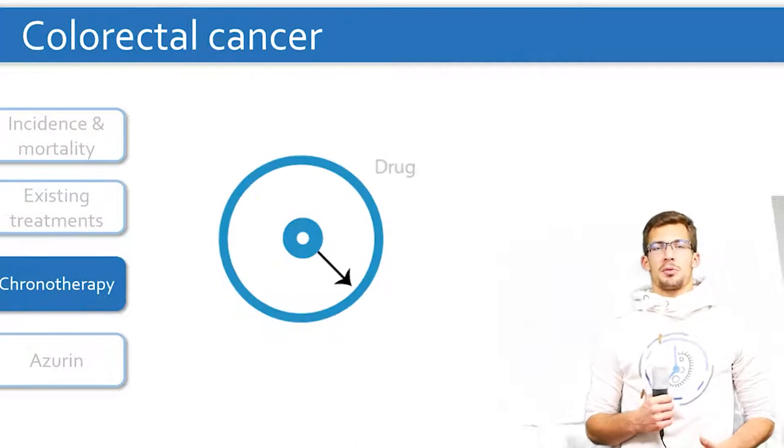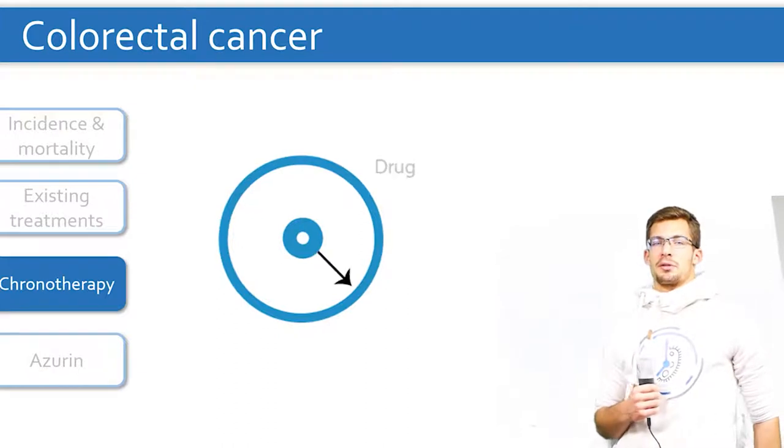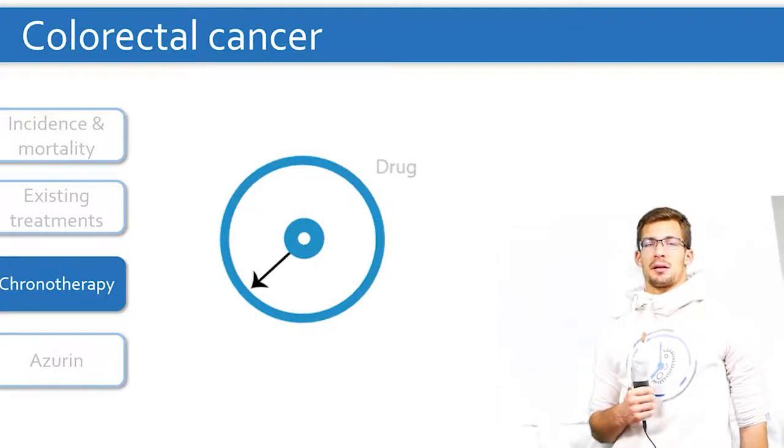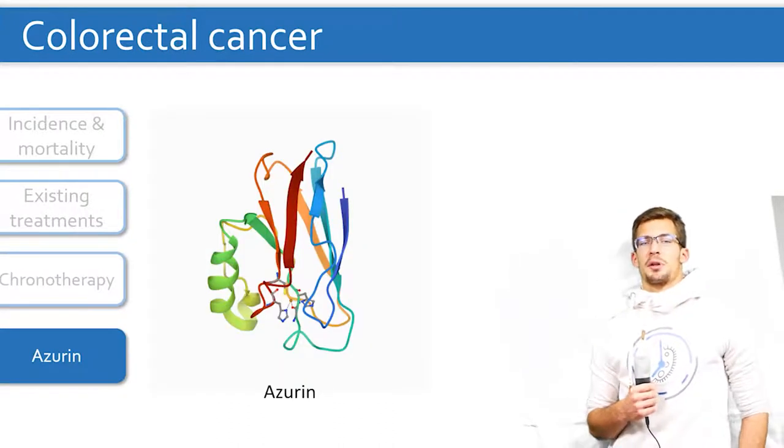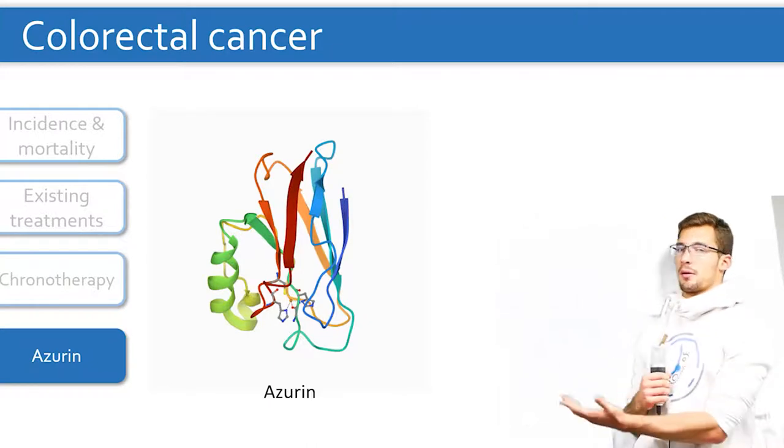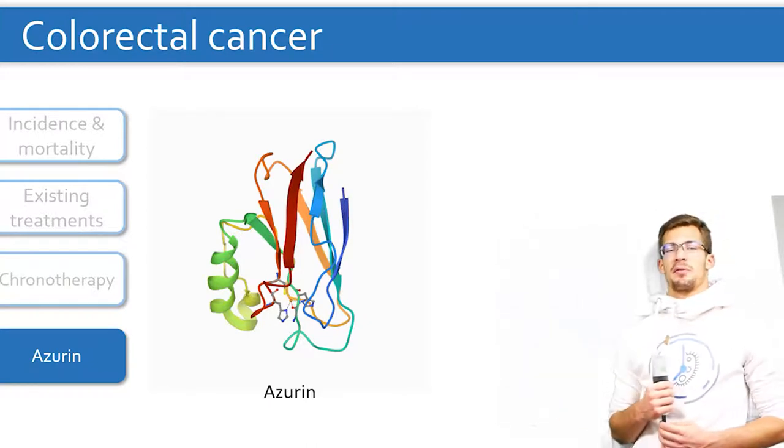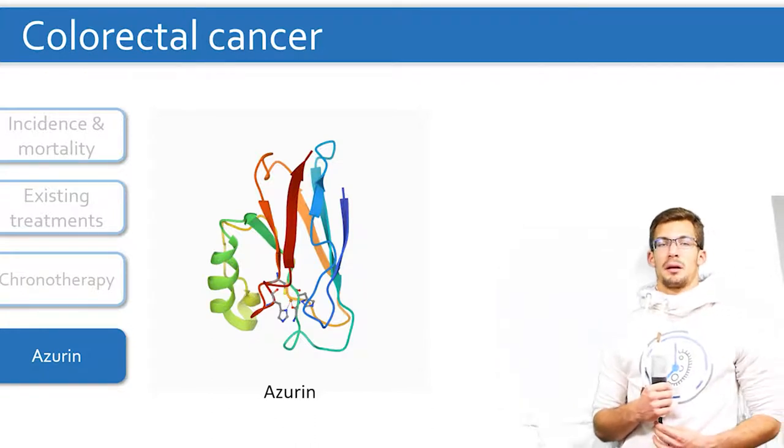Another new approach is chronotherapy. It says that if you can synchronize the delivery of the drug with the natural circadian cycle, you can maximize the efficiency and reduce its side effects. For the treatment with bacteria, one of the most promising anti-cancer drugs is azurin. It interacts with p53, a protein involved in controlling the fate of the tumor, thereby killing it.